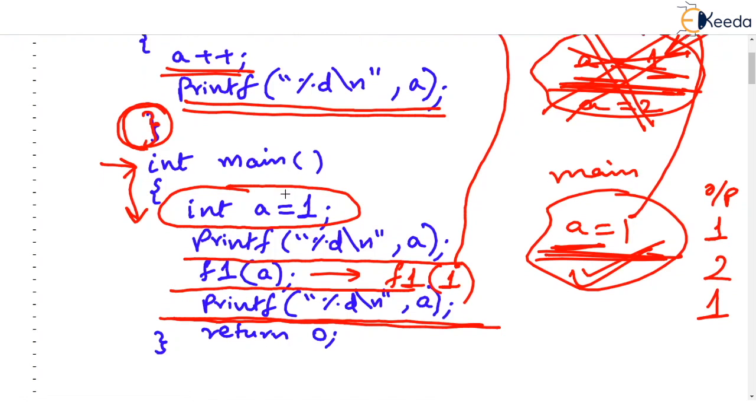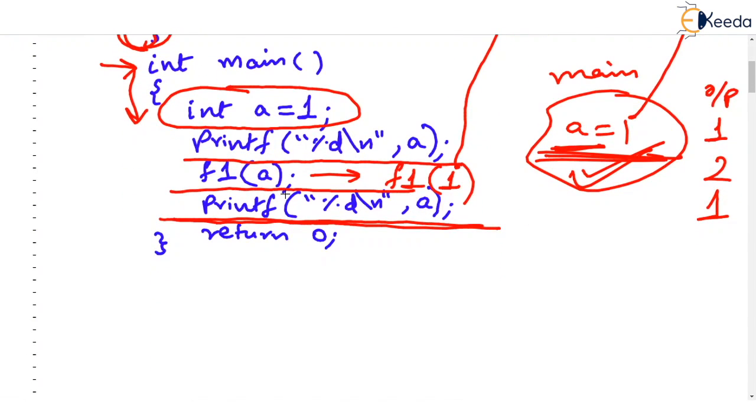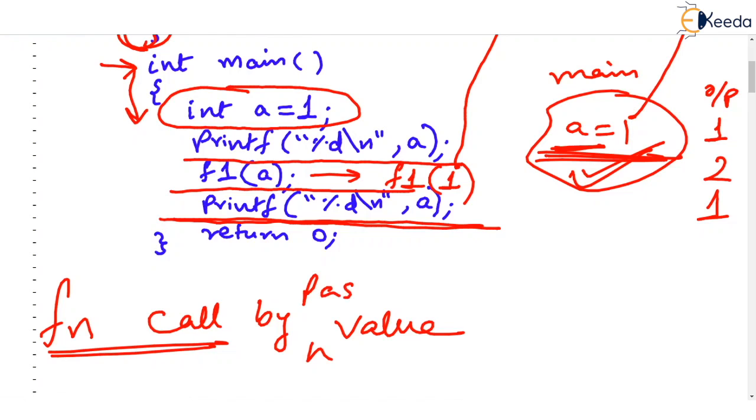In textbook sense, many authors call this as call by value concept. Actually, this is function call - we are calling a function by passing a value. And what happens under those conditions is that the original value that you have passed does not change, it remains intact. Whatever play you do with the passed value, that parameter is changed, but original value will not change.